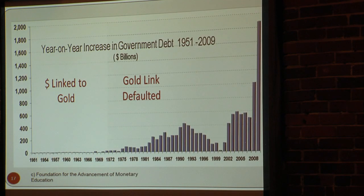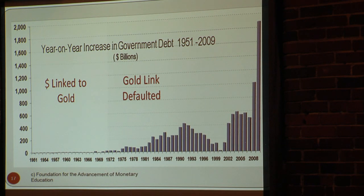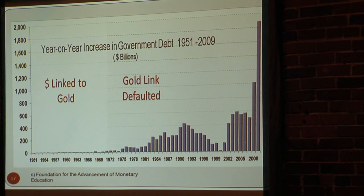This chart shows the year-on-year increase in debt. As you can see, it was hardly increasing at all until the last tie to gold was broken. After that, the debt levels of this country took off. That big bar on the right-hand side in 2009 at the end of the chart shows the increase in debt.